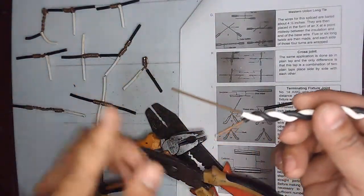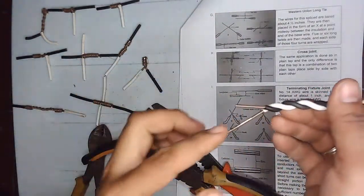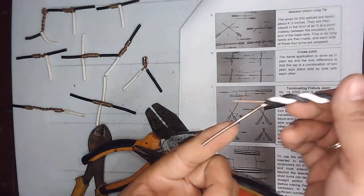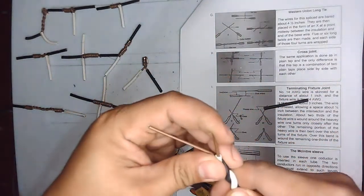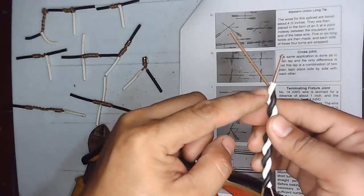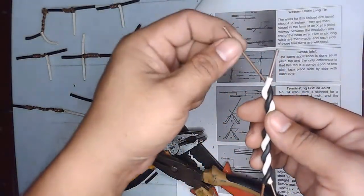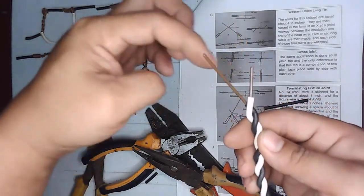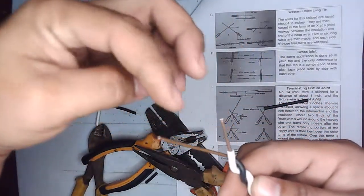Next is, as you can see, here is the shorter wire, the longer wire. The same way with the other side: the shorter wire of the white wire and the longer wire of the black wire. So the longer wire will be wrapped around the shorter wire.